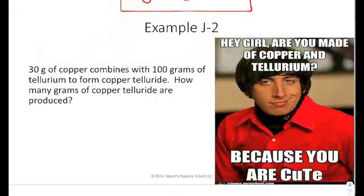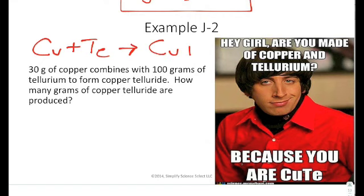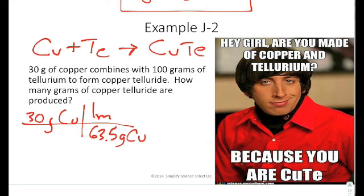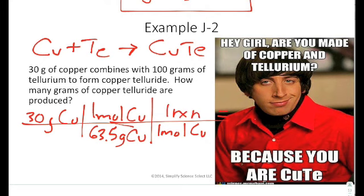So let's look at the last example. And the last example says, 30 grams of copper combines with 100 grams of tellurium to form copper telluride. How many grams of copper telluride are produced? So if you look, you have copper plus telluride is going to go to copper telluride. And so whenever you look at this, you have the idea that's our reaction that's going to occur. It's a one-to-one relationship, so we would say that we have 30 grams of copper, and that there are 63.5 grams of copper in one mole of copper. And then you can say that there's one mole of copper in one reaction. So I produce 0.472 reactions with copper.